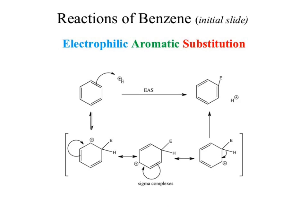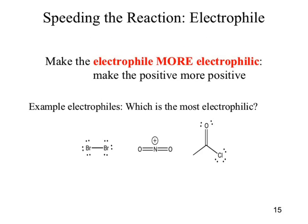We want to make the electrophile more electrophilic — take our positive and make it more positive. We've got several electrophiles shown below. Which would you expect to be the most electrophilic? The one with the positive sign is probably the most electrophilic because it's already positive — you can't get more positive than positive. So that is probably our most electrophilic.